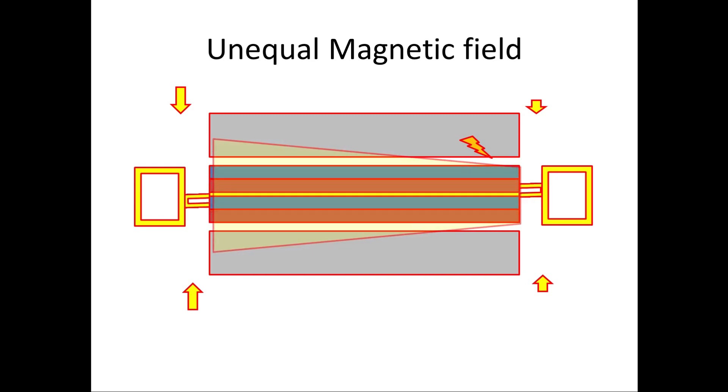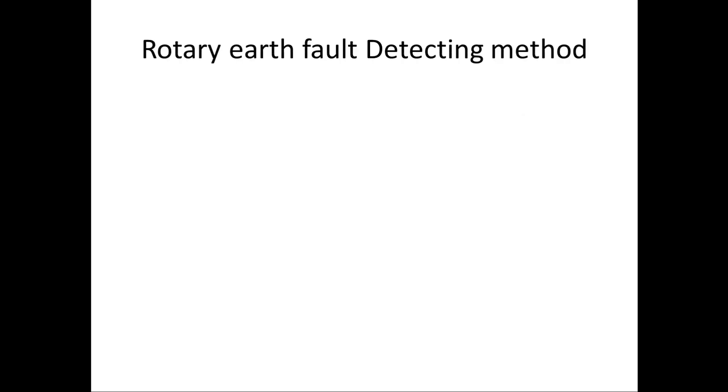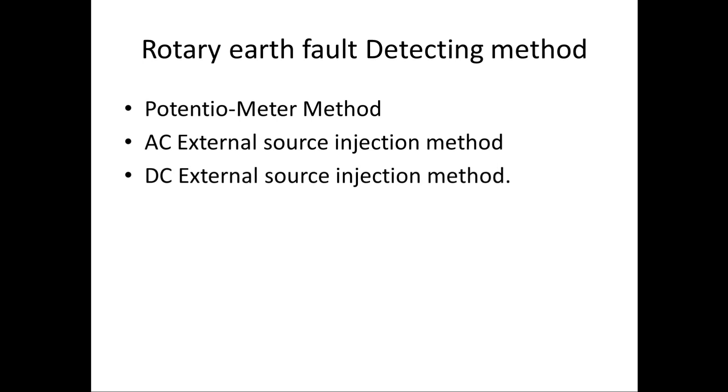Now we will see how to detect the earth fault on rotor. There are many methods for detecting earth fault. We are going to see three methods. First one is potentiometer method. Second one is AC source injection method. Third one is DC source injection method.